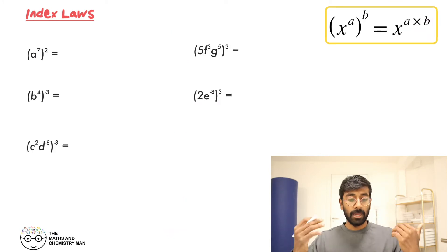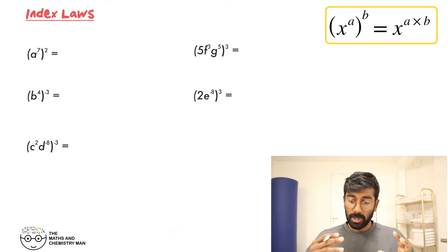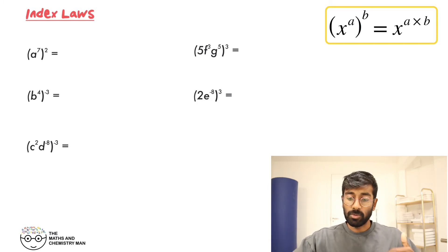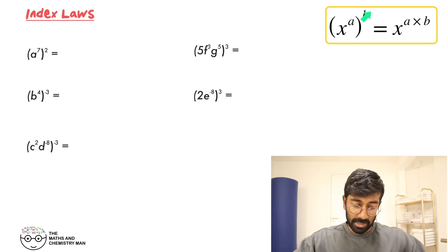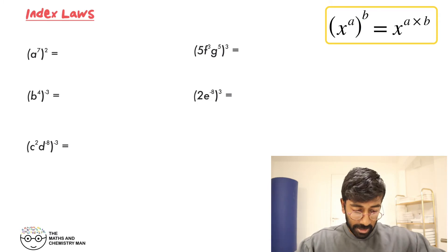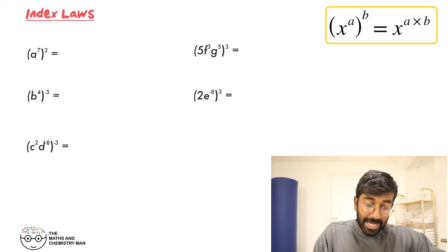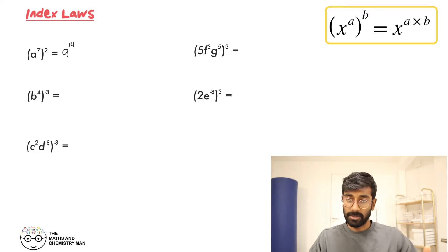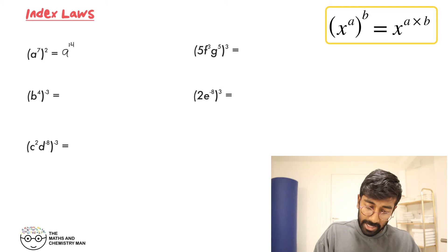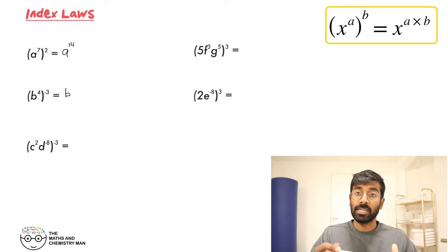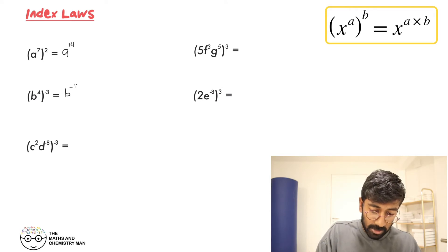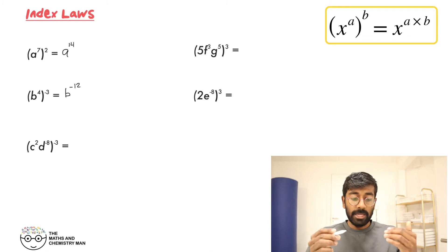Next index law is where we've got powers and brackets. What do we do? We just multiply the powers together. So for the first one, that's A to the power of 7 times 2, which is A to the power of 14. Next one — multiply the powers — 4 times minus 3 — B to the power of minus 12.